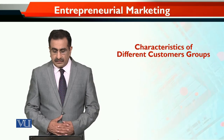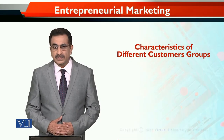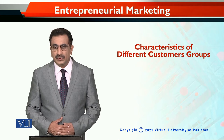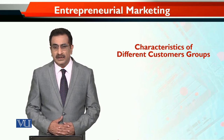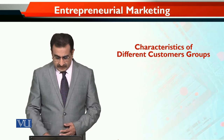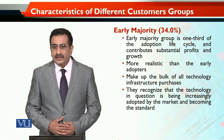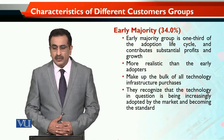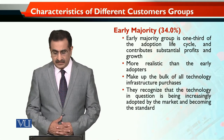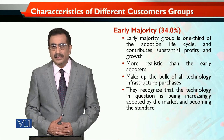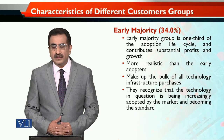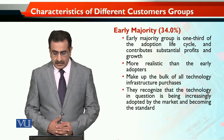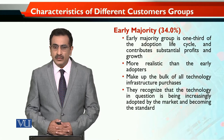We are discussing characteristics of different customer groups as shown in the bell-shaped curve of the technology adoption and diffusion. The third group is the early majority. The early majority group is 34% of your total market, so it is a very sizable group and a very important group.